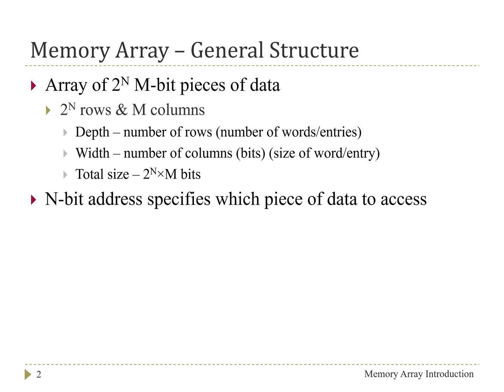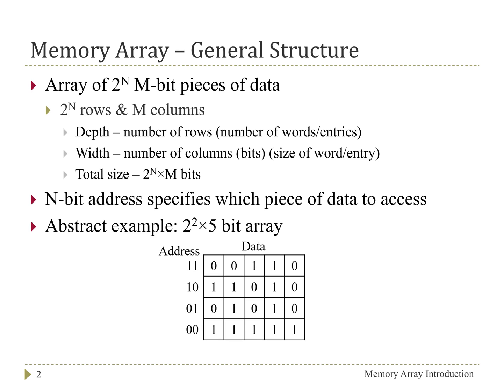And so as an example of what a memory array could look like or an abstract memory array could look like, we're going to look at an example where we have 2 to the 2 or 4 rows and each row is going to have 5 bits of information. And so this figure here is showing abstractly what the memory array could look like. So we've got a total of 4 rows. Each of those rows has got an address associated with it that allows us to identify which row we're trying to access or which entry we're trying to access. And then within each of these rows we have 5 bits of data and each of these rows can store different bits of data.